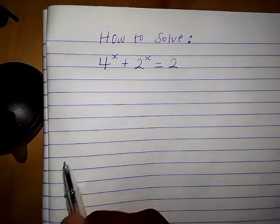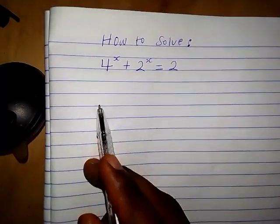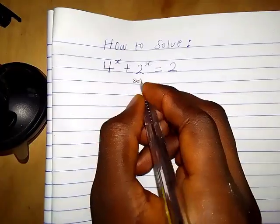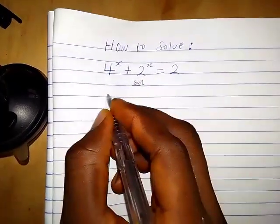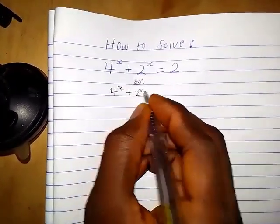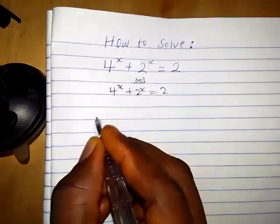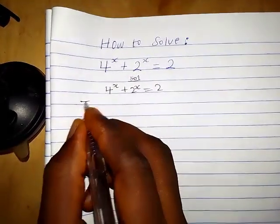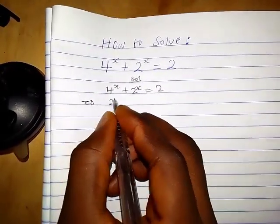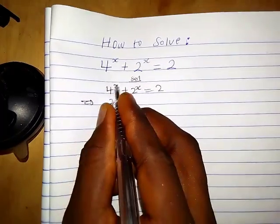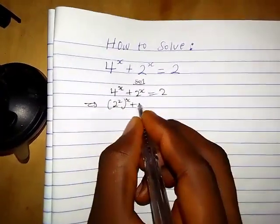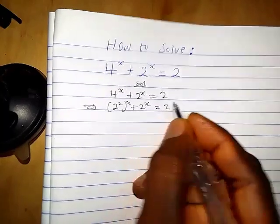We have a very nice exponential equation — how do we find the value of the solution? We have 4 raised to the power x plus 2 raised to the power x equals 2. This implies that we can write 4 as 2 squared, so we have 2 squared raised to the power x plus 2 raised to the power x equals 2.